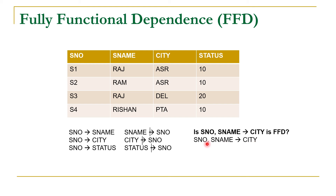For a given combination of S number and S name, we should have one value of city. Since S number is the primary key, the combination of S number and S name is considered a super key — it is also a unique column combination. So yes, this is true: the combination of S number and S name has a single value of city. For example, the combination S1 and Raj appears only once in the dataset, and for this combination we have only one value of city, which is Amritsar.